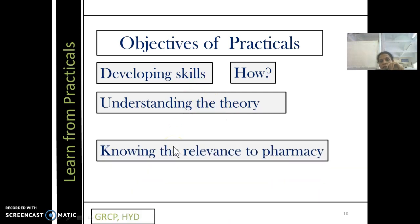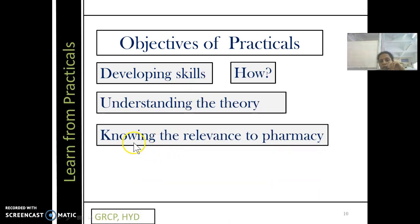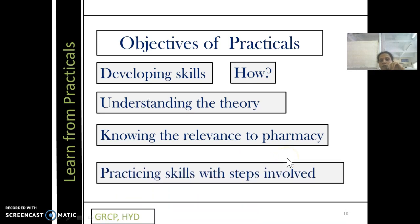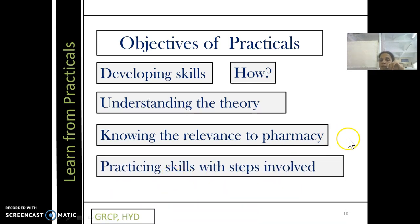So whatever we understand, we practice it. And being the pharmacist, we have to look into the thing, how these developmental skills are related to our field, our pharmacy field. And after relating it to the field, it is very important to not stop there, but to practice the same skills, whatever we have learned with the steps involved. For example, if any experimentation is given, don't look at it as a single task. You divide, for simplification purpose, you have to divide into small steps. And each and every point, you just see whether all those steps are done or not, so that the practical or the experimentation will be completed. So these are the four things: with understanding of the theory, we need to develop the skills, we have to see its relevance to pharmacy, and we have to practice those skills with the steps involved.